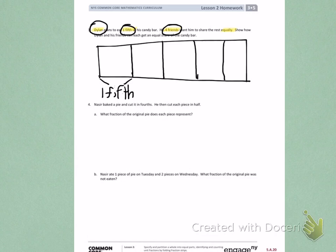Number 4. Nasir baked a pie and cut it into fourths. Then he cut each piece in half. What fraction of the original pie does each piece represent?